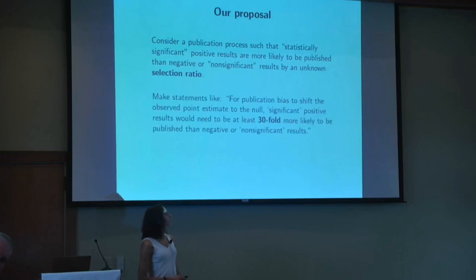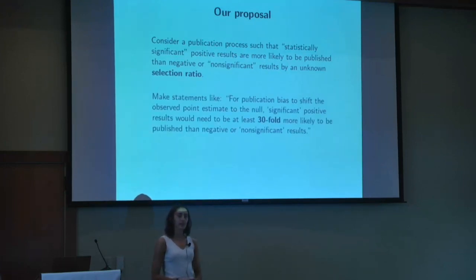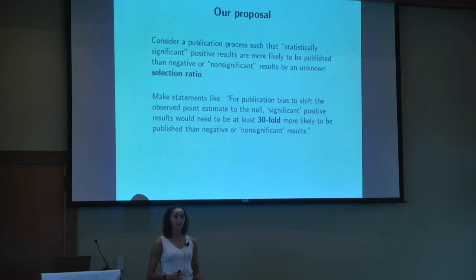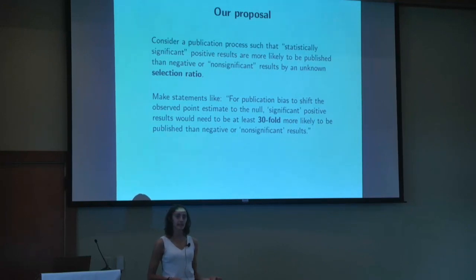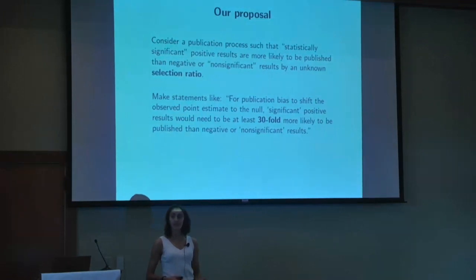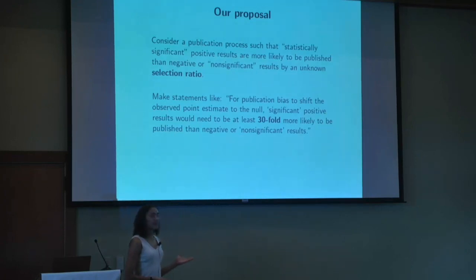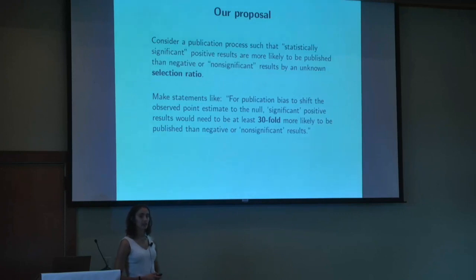Under this framework, we're going to make statements of the following form in our meta-analysis: in order for publication bias to shift my pooled point estimate to the null — to completely explain away my results — it would need to be the case that significant positive results were at least, say, 30 times more likely to get published than negative or non-significant results. We can then think about whether this situation is actually plausible and assess the robustness of our findings.